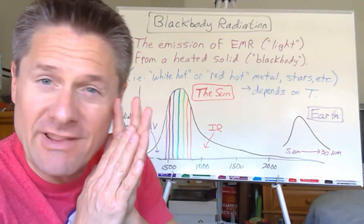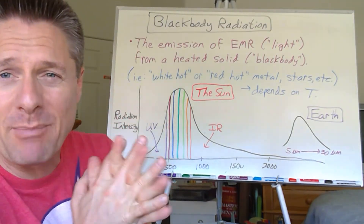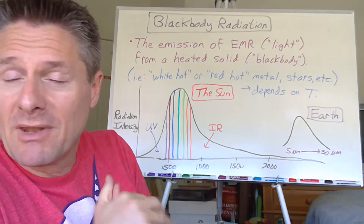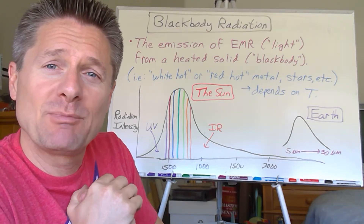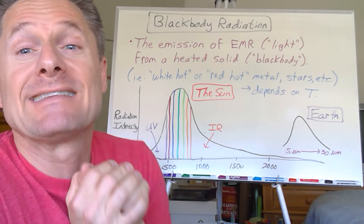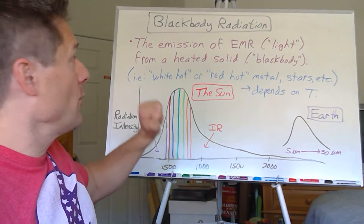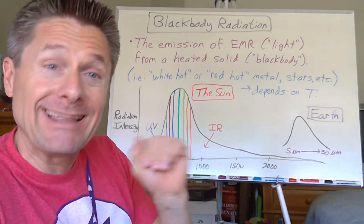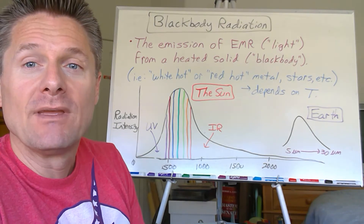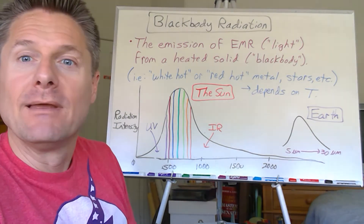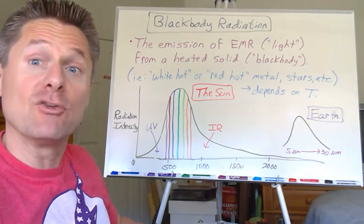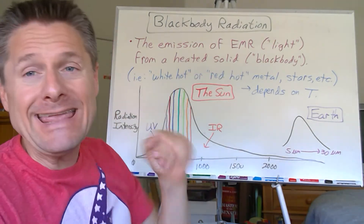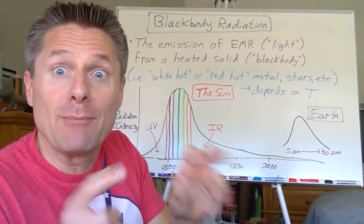Let's take a look at the first of these three observations that tripped up the classical theorists: black body radiation. They've been observing it for a long time, but nobody was able to successfully explain it. Let's define it again, show you what the data looks like, and then show you what happened when they applied classical mechanics — and why Planck was forced to explain it using quantum mechanics.